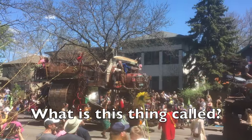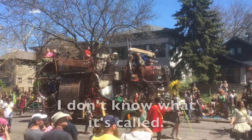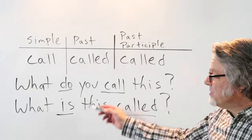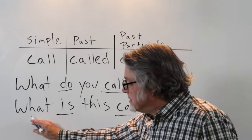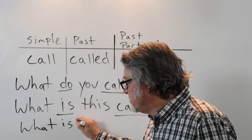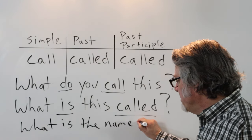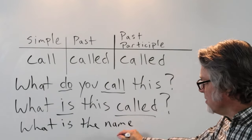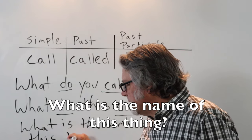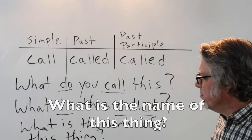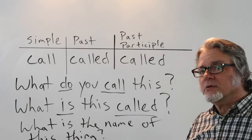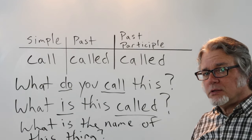'What is this thing called?' — 'I don't know what it's called.' When asking either question, what you want is the name of something, so you could also say 'What is the name of this thing?' in English. But most people will ask the question like this: 'What do you call this?' or 'What is this called?'